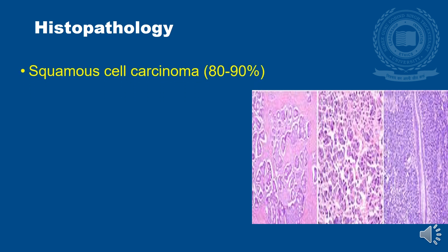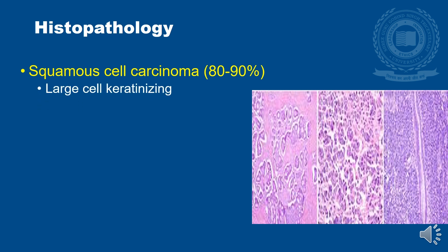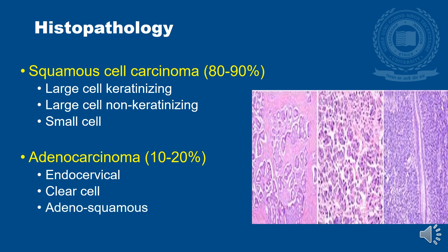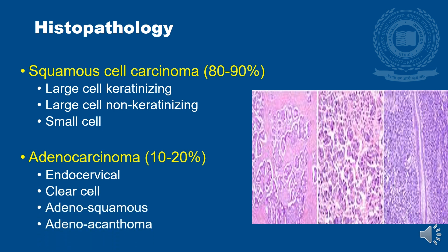Histopathologically, 80–90% are squamous cell carcinoma, subdivided into large cell keratinizing type, large cell non-keratinizing type, and small cell type. The remaining 10–20%, arising from inside the cervical canal, are adenocarcinoma, with subvarieties including endocervical, clear cell, adenosquamous, and adenoacanthoma.